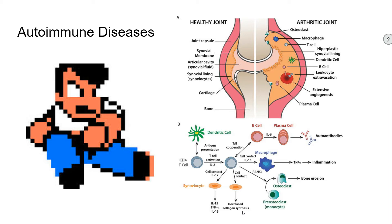Most treatment for autoimmune diseases involves suppressing the entire immune system, which can leave you vulnerable to other things. Typically, anti-inflammatory drugs are used as well, because the immune system triggers an inflammatory response as part of helping the body heal — but if it's all over the place, it's not a good thing. Doctors will typically prescribe steroids as an anti-inflammatory. They can also prescribe things that block cytokine action, like blocking interleukin-1 or interleukin-2, which stops the immune system from overworking. If it increases quality of life, it's a good thing.